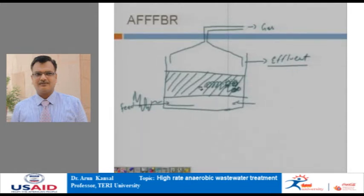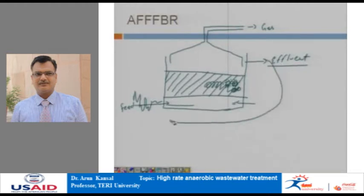Another common problem associated with this reactor type is clogging due to non-uniform growth of biofilms and high suspended solid concentration in the wastewater — just like the choking problem in a trickling filter. Non-uniform growth and consequent clogging occurs especially at the influent entry. One measure to combat this is recirculation of effluent, similar to a trickling filter, where raw wastewater and treated effluent can enter a sump before being fed in.